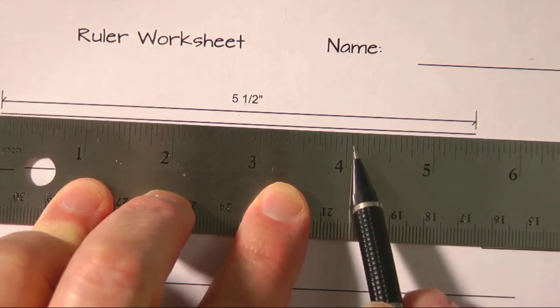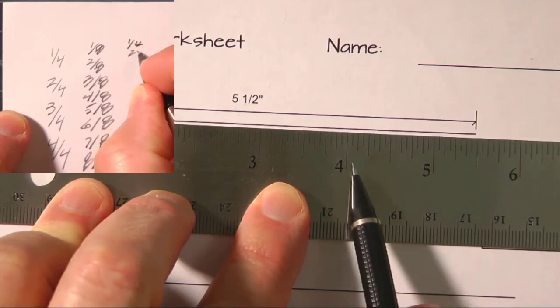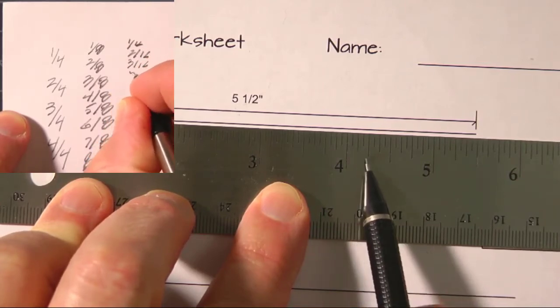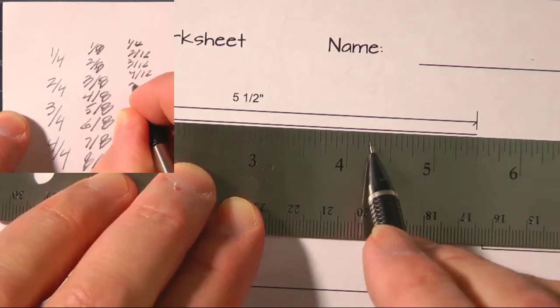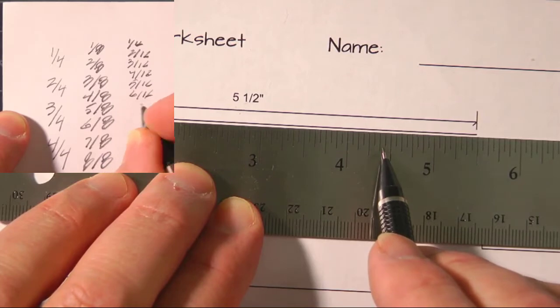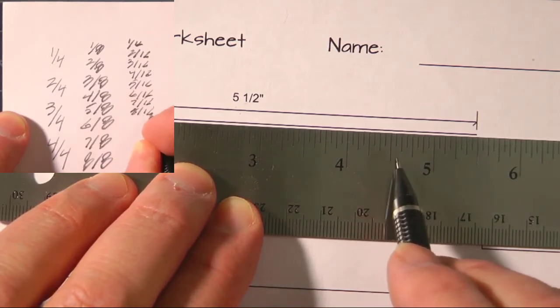In between those, the tiniest lines are sixteenths. So we have four and one sixteenth, or four and two sixteenths which is also one eighth, three sixteenths, four sixteenths which is also a quarter, five, six, three eighths, seven, eight sixteenths, which is a half.